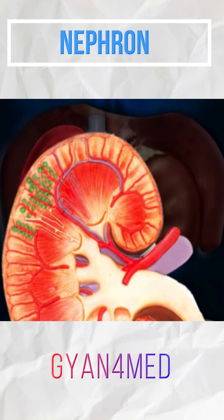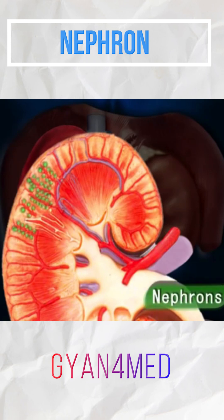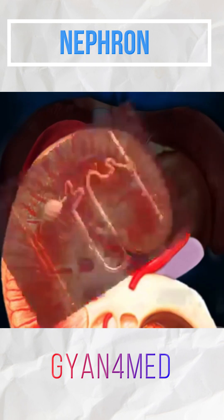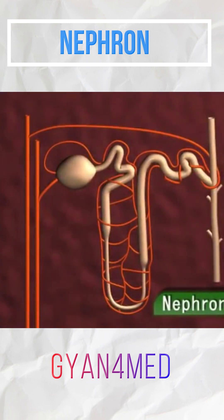These filters are called nephrons. The cortex and medulla together comprise millions of such nephrons. The nephron is the structural and functional unit of a kidney.